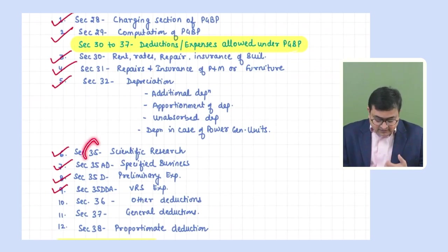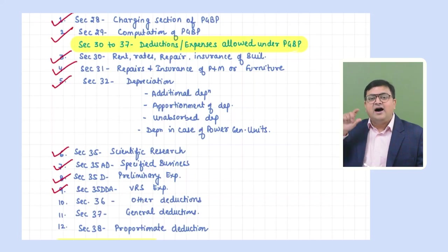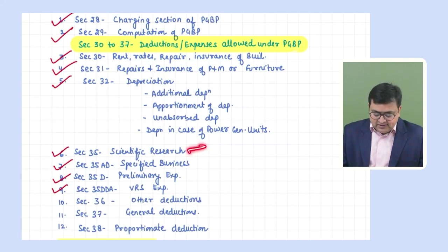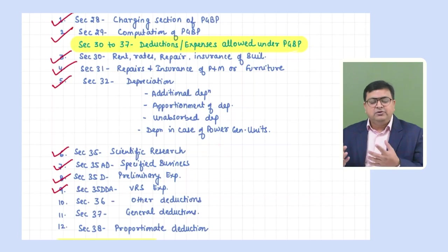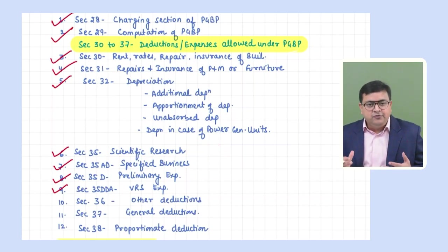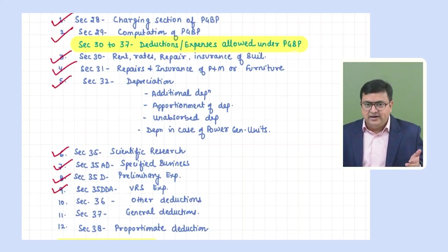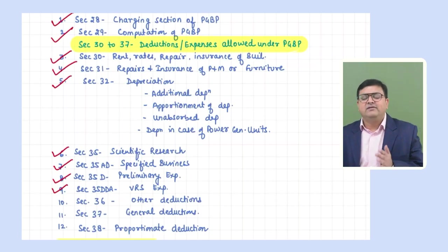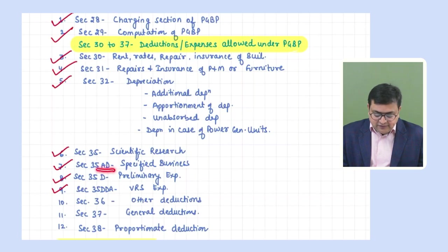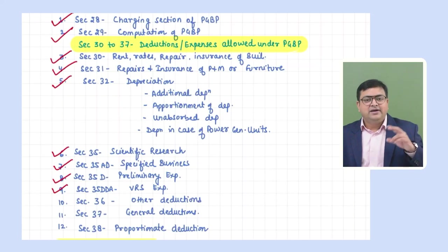We've also covered apportionment of depreciation, unabsorbed depreciation, and depreciation for power generating units. Section 35 covers scientific research: outside research contributions to IIT, national laboratory, or approved institutions are allowed but not under the default scheme. Under the optional scheme, both in-house and outside research are allowed.